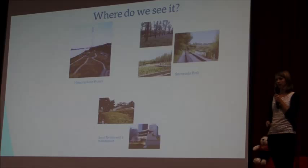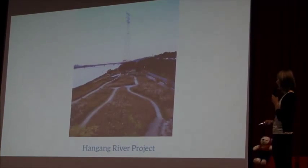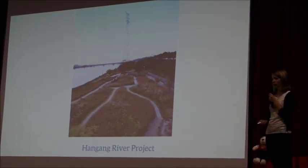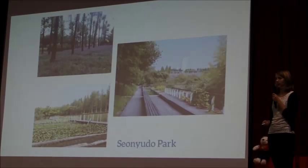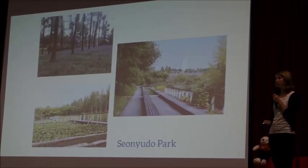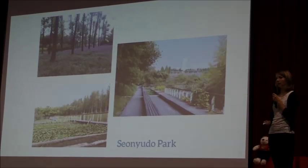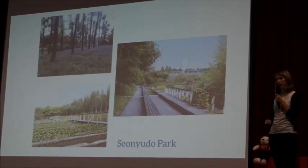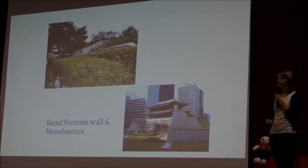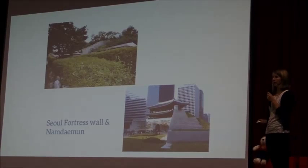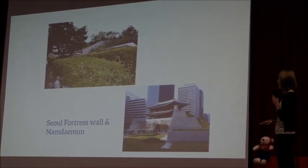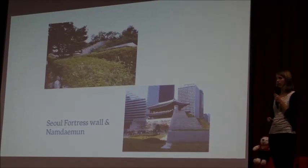These are some examples of landscape architecture specifically in Seoul. The Han River project is a newer project opening up the waterfront. Son Yudo Park is an example of taking a previous landscape and making it into something new — taking a water treatment plant and making it into a park where people can enjoy nature and different ecosystems. Landscape architecture also deals with preservation and restoration of heritage, such as Namdaemun and the Seoul Fortress Wall, restoring old sites and making them more usable today.